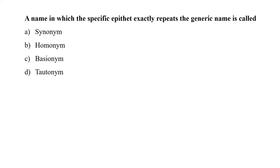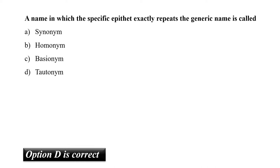The first question is: a name in which the specific epithet exactly repeats the generic name is called what? Our correct option is D, i.e. tautonym. One example of tautonym is Rattus rattus, where the specific epithet exactly repeats the generic name.